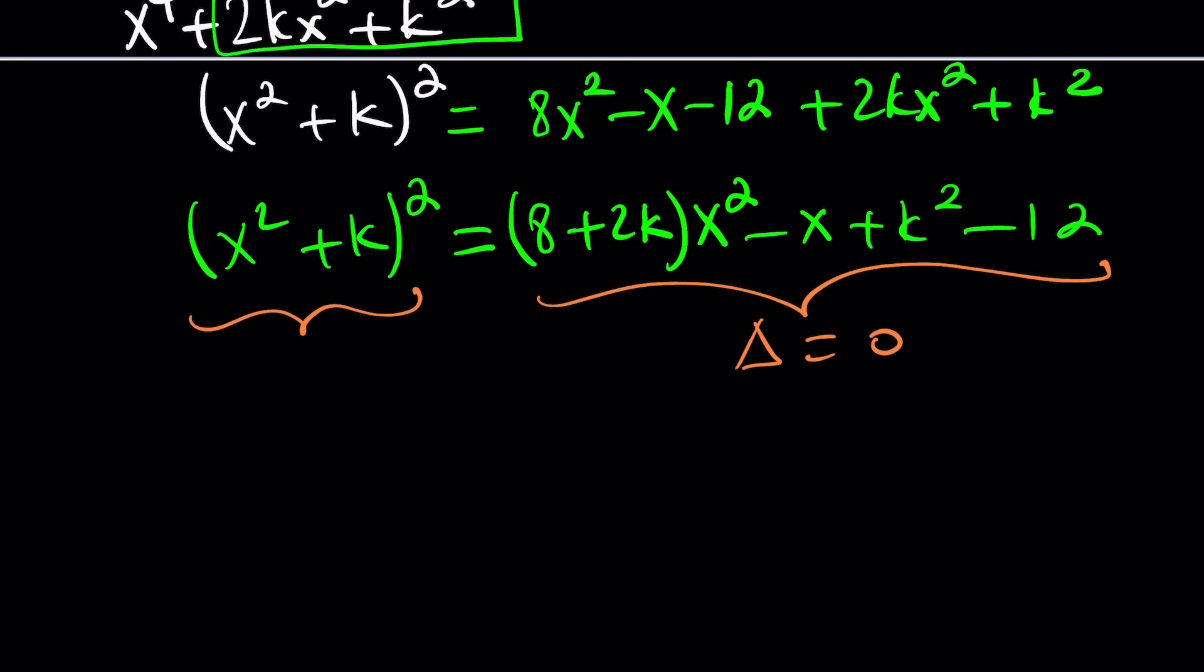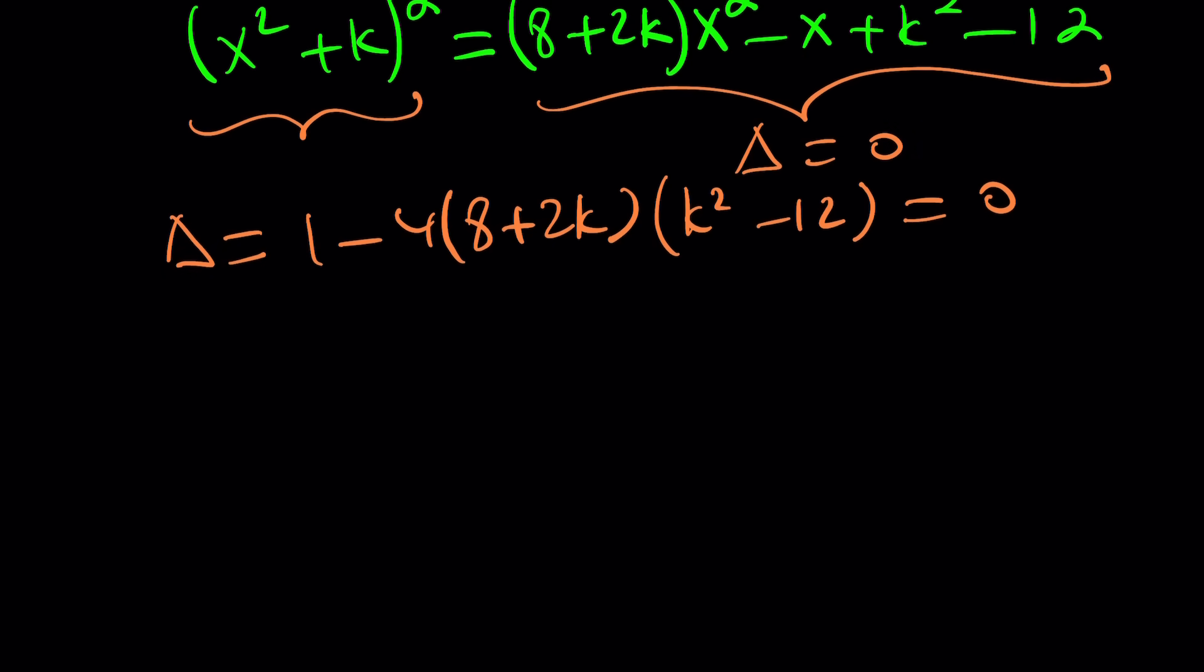And the right-hand side, you have to add this on the right-hand side. So, it's going to look like this: 8 plus 2kx squared and then minus x plus k squared minus 12. Now, here, there are two things you can do. We always branch off. You can go ahead and think about it this way. This is a perfect square, so this should also be a perfect square. Because a perfect square can only equal a perfect square.